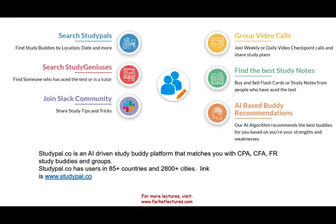Also, if you're looking for a study buddy, studypal.co is an artificial intelligence-driven buddy platform that matches you with a CPA or a CFA. They have users in 85 countries, in 2,800 cities in the US from LA to New York.